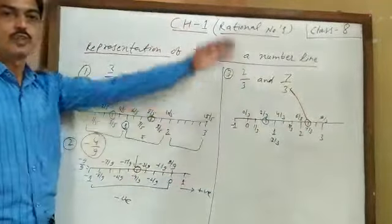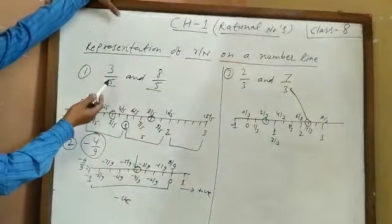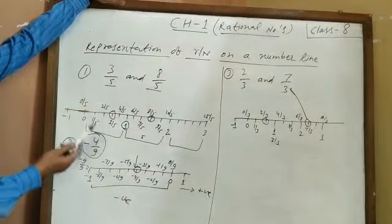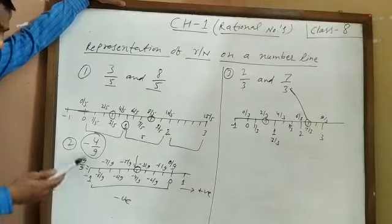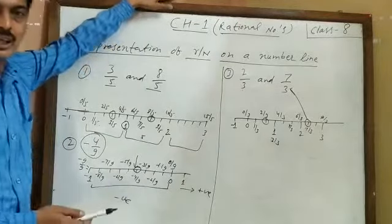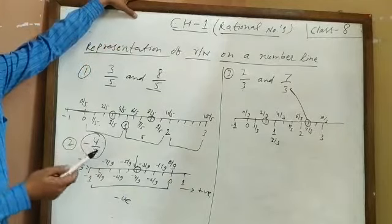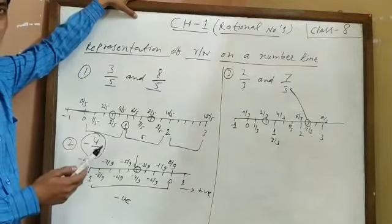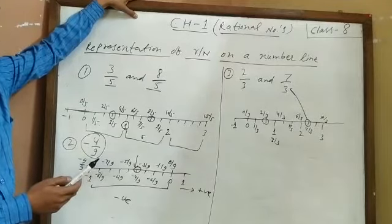In this way, we represent different rational numbers on a number line. You will do the 'Try This' on page number 70, and solve Question number 1 and Question number 2 of exercise 1 upon 3. Thanks.